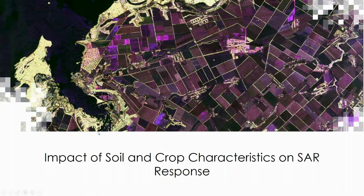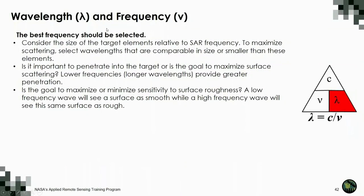Having covered the radar basics — wavelengths, frequency, polarization, incidence angle, azimuth and range resolution — let's now talk about how radar responds to agricultural targets: soils and crops. Wavelength and frequency are interrelated and can be converted using the speed of light. A common question is: what is the best frequency for mapping soils or crops? That is a difficult question to answer because it depends on the specific application.